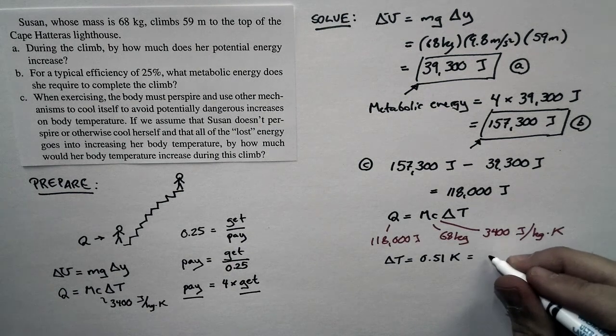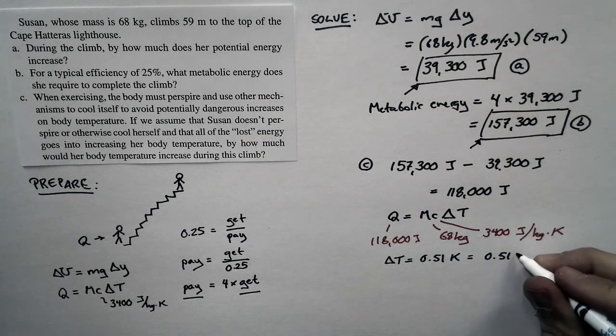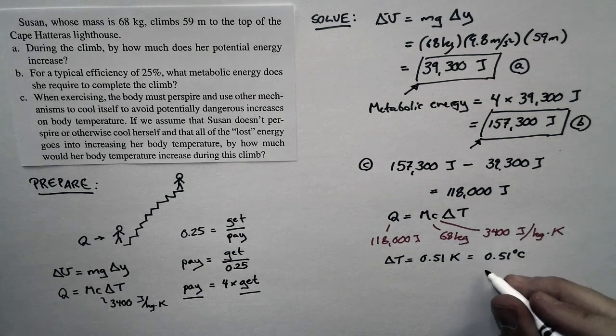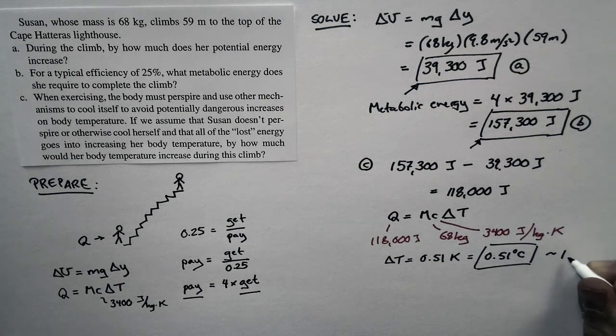We're more apt to want it as in Celsius. And since it's a temperature change, Celsius and Kelvin are the same thing. So it's 0.51 degrees Celsius. Notice that this is about 1 degree Fahrenheit.